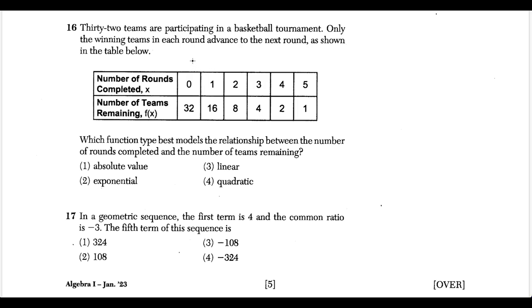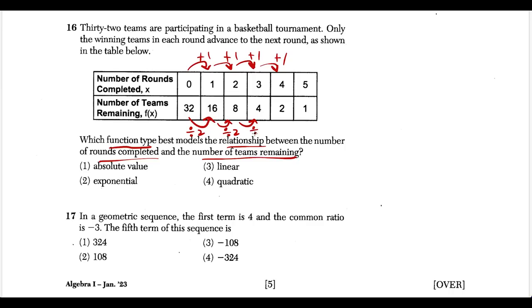Question sixteen: the x values increase by one, a constant rate. The y values go 32, 16, 8, 4, 2 — decreasing by dividing by two each time. When you multiply or divide by the same number to get from one y value to the next, the pattern is exponential. The function would be 32 times (one half) to the x power. Exponential is definitely our answer.